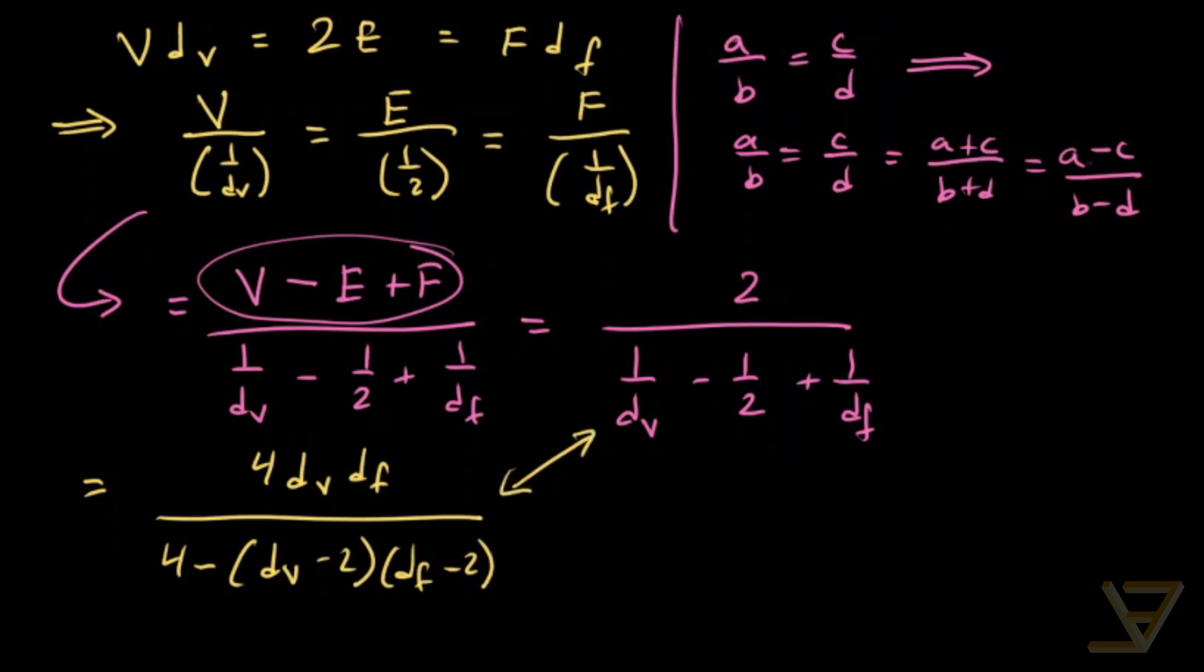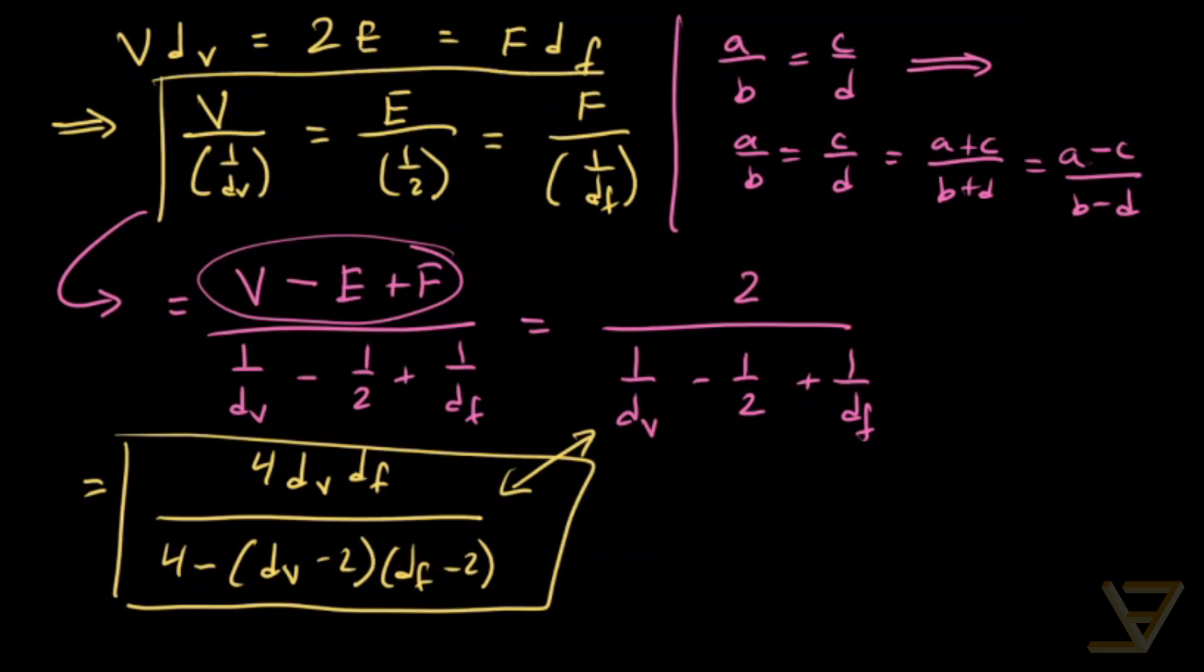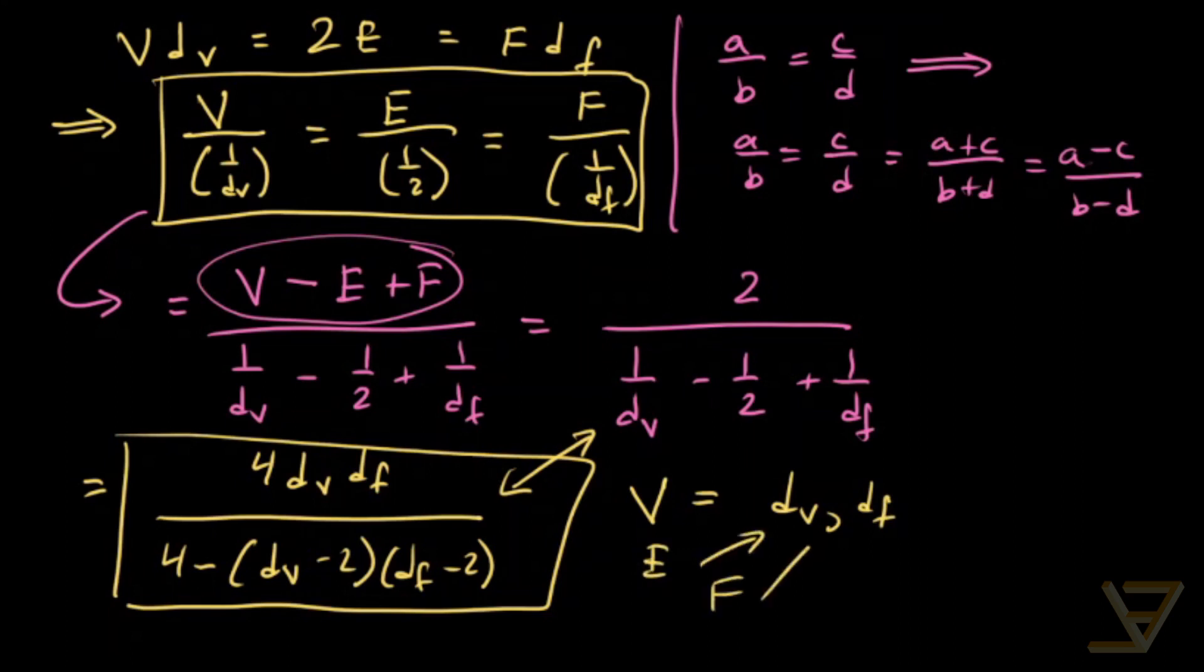Alright, so we're getting close now. This quantity is equal to each of these quantities. That means V can be written in terms of DVDF and so can E and so can F. So it's really these two numbers that we need to figure out. And then we can figure out V, we can figure out E and we can figure out F. So we need to find all the possible DVs and DFs.